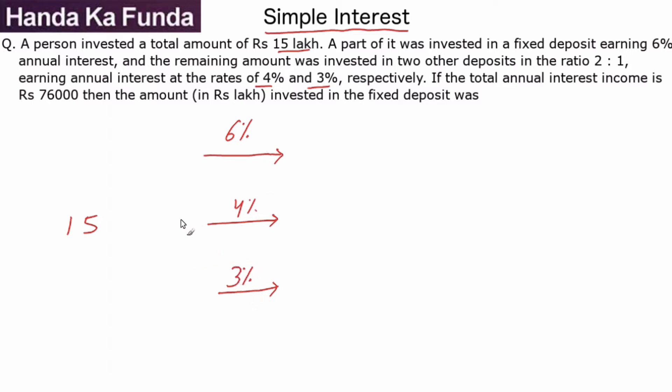We don't know what the overall ratio is, but we know the ratio between these two is 2:1. So let's say 2x was invested here and x was invested here.